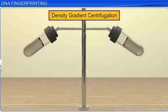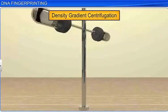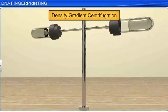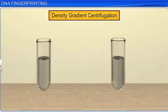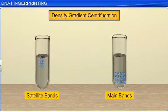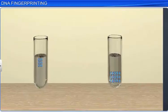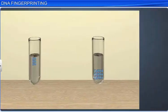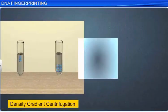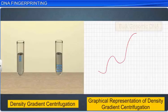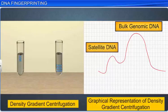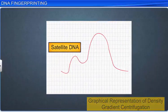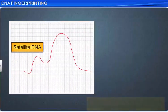As satellite DNA is lighter and bulk DNA is heavier, they get separated on the basis of their density. Graphical representation shows bulk genomic DNA as a major peak, and repetitive DNA as smaller peaks, known as satellite DNA. Satellite DNA is highly repetitive and consists of non-coding sequences.